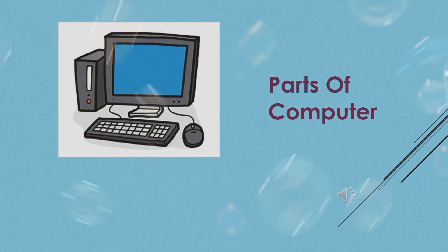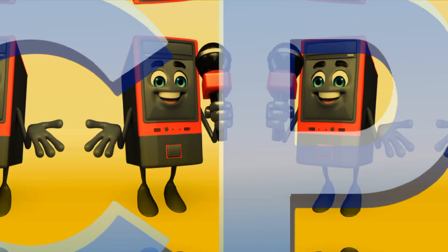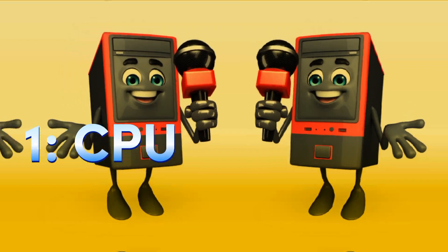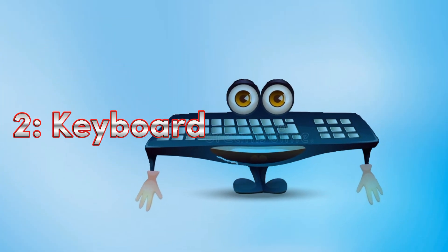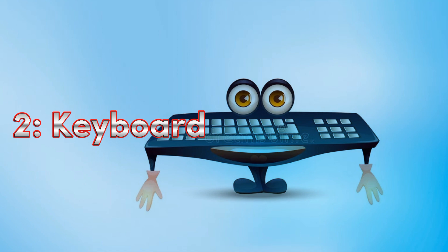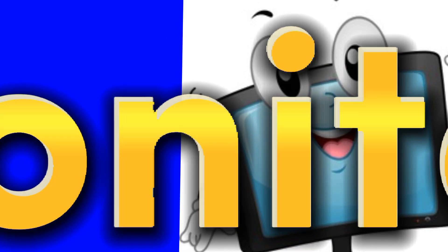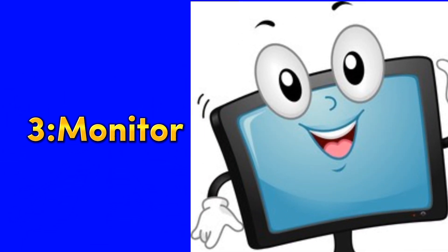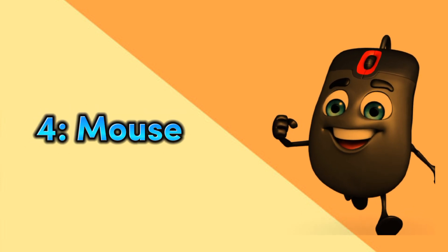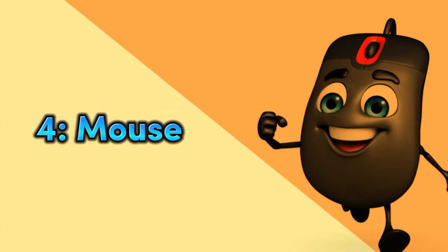There are four main parts of a computer: 1. CPU, 2. Keyboard, 3. Monitor, 4. Mouse.